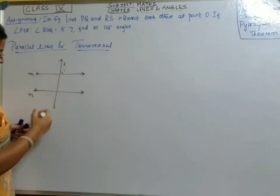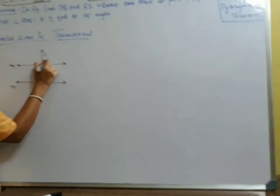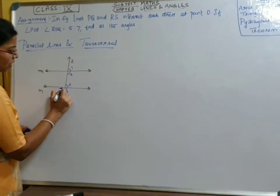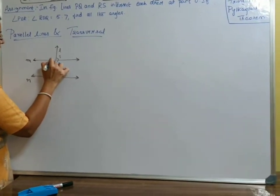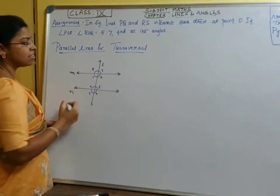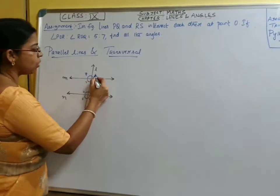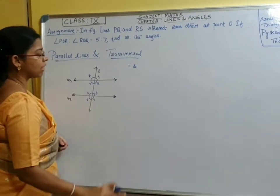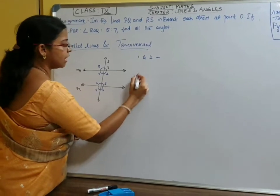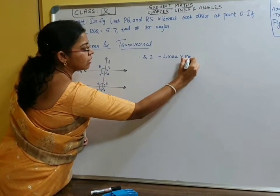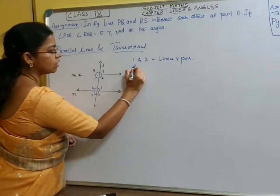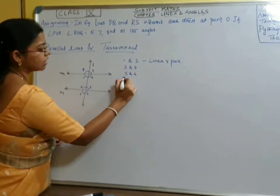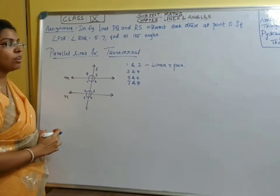Eight angles are formed: one, two, three, four, five, six, seven, and eight. What is the relationship between these angles? We will just recall. Angles one and two, three and four, five and six, seven and eight — are these only linear pairs? No.